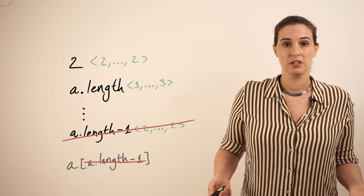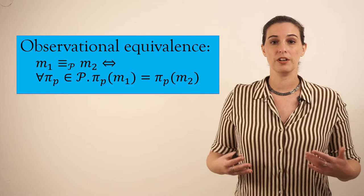To fix this, we generalize observational equivalence to now define two programs as equivalent if for every predicate in the specification, the result of that predicate's observer is the same for both programs. What's an observer? It's a function that represents that predicate for the purpose of an equivalence reduction.